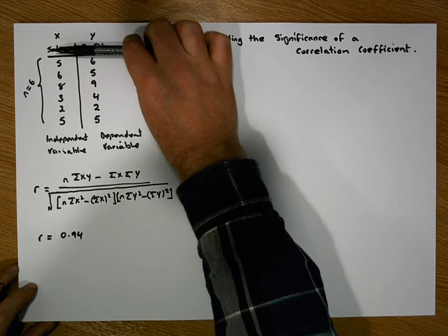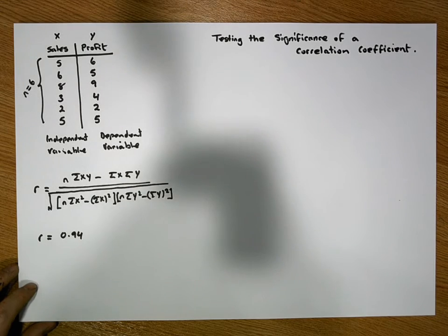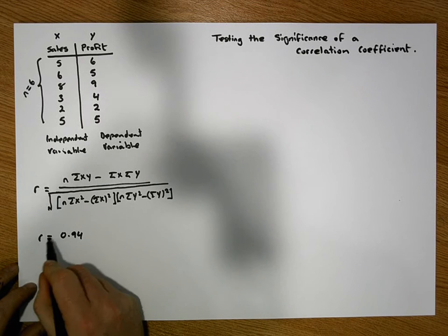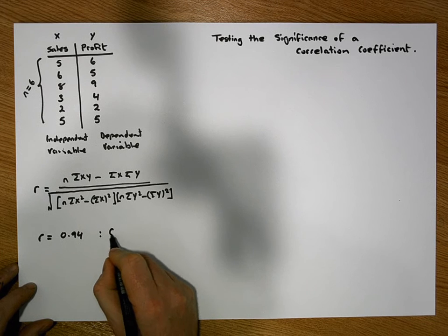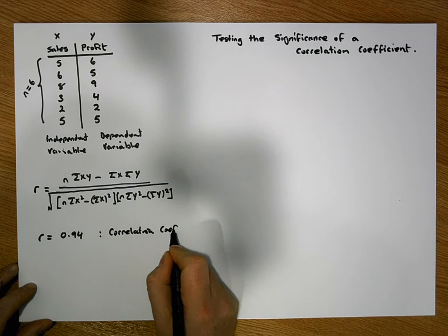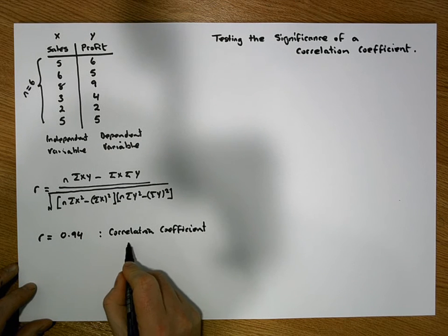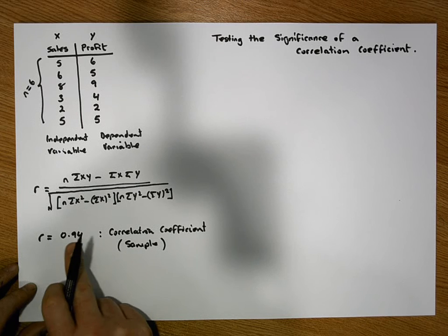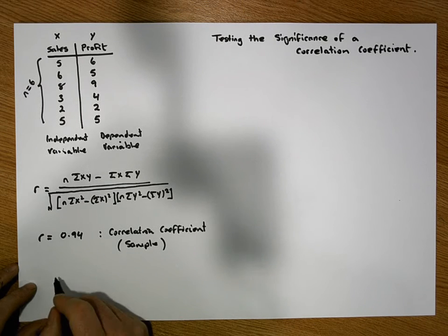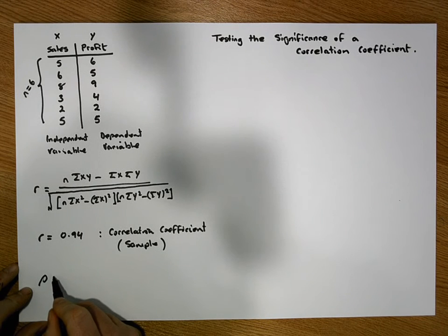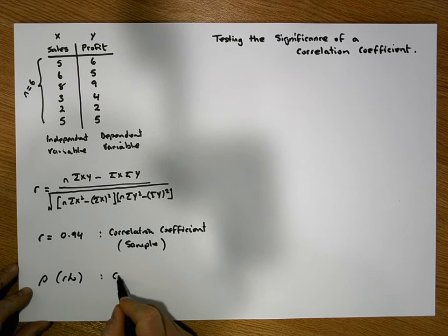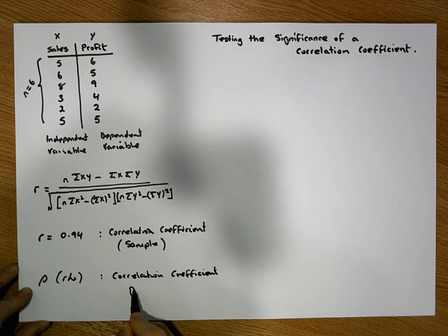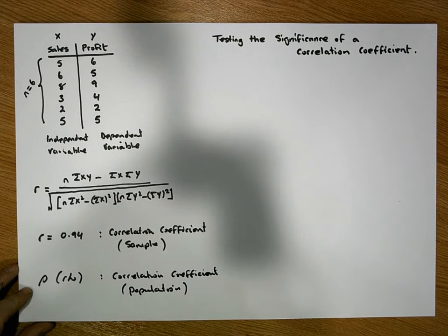What's important to know here is that this sample data has been drawn from a particular population, and that population would also have a real correlation coefficient associated with it. The r value we've calculated is the sample correlation coefficient. There is also a true population correlation coefficient, known as rho (ρ), which is the correlation coefficient for the population.